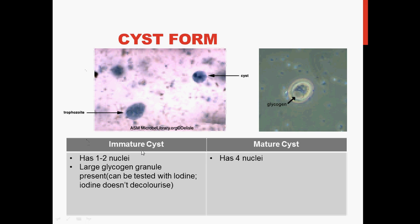An immature cyst has one to two nuclei. A large glycogen granule is present and can be tested with iodine, but the iodine doesn't decolorize. Usually iodine changes from brown to blue-black in the presence of starch. A mature cyst has four nuclei.